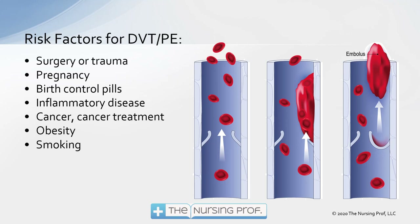Pregnancy, birth control pills, and inflammatory disease of any kind also contribute. Remember, with inflammation, three things happen: vasodilation, capillary permeability, and clotting — and the clotting piece is what contributes to our DVT or pulmonary embolism. Cancer and cancer treatments both increase our risk, as do obesity and smoking.